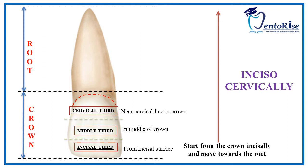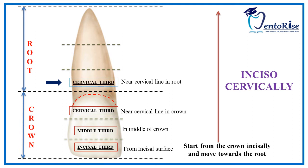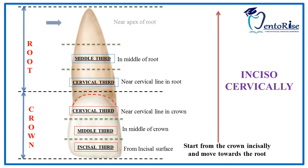Likewise, divide the root into three equal parts as shown in the figure. The one third near to the cervical line of the tooth is called the cervical third. The one third in the middle of the root is called the middle third. And the one third near the apex of the root is called the apical third.